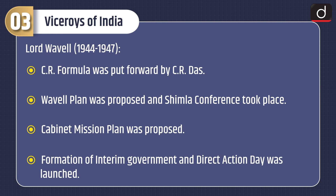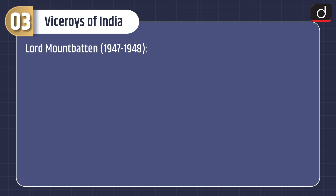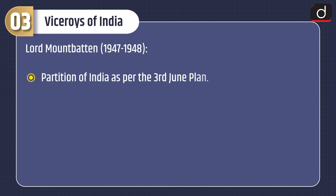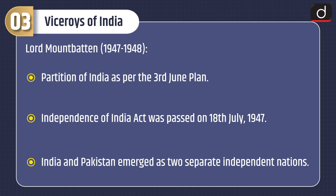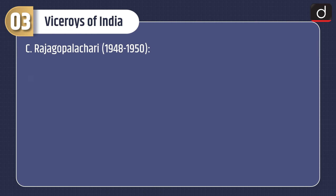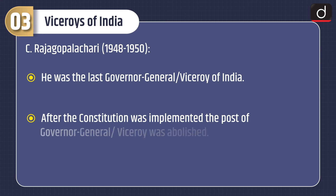Formation of the interim government and Direct Action Day was launched. Lord Mountbatten, 1947–1948: partition of India as per the 3rd June Plan. The Indian Independence Act was passed on 18th July 1947 and India and Pakistan emerged as two separate independent nations. C. Rajagopalachari, 1948–1950, was the last Governor General of India. After the constitution was implemented, the post of Governor General was abolished.